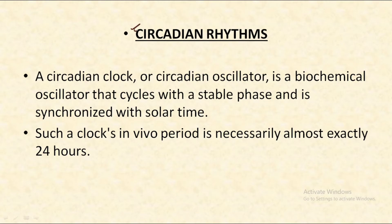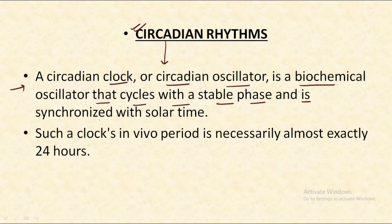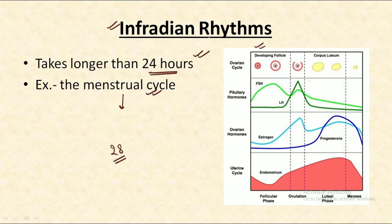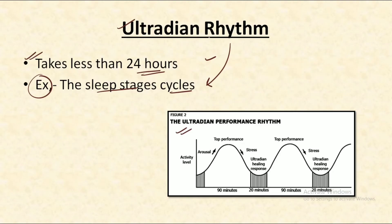Then we have circadian rhythms, which is the most important type of rhythm in our body. The circadian clock, or circadian oscillator, is a biochemical oscillator that cycles with a stable phase and is synchronized with solar time — that is, the rising and the setting of the sun. Such a clock's in vivo period is necessarily almost exactly 24 hours. So circadian rhythms are usually of 24 hours, infraradians take longer than 24 hours, and ultraradians take less than 24 hours.